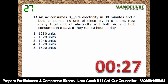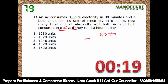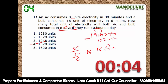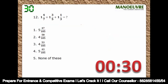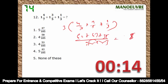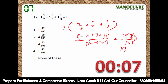AC consumes 18 units of electricity in 30 minutes and a bulb consumes 18 units in 6 hours. How many total units will both AC and bulb consume in 8 days? Something has to be multiplied: 8 divided by 30, divided by 60. This gives 16 + 6 × 3 = 18, which is 19. Answer: 152. The difference is 2053, so answer option is fourth.